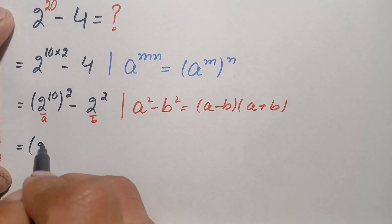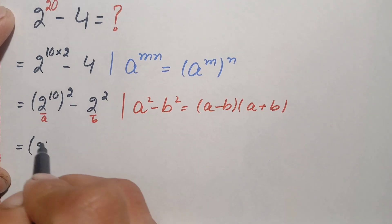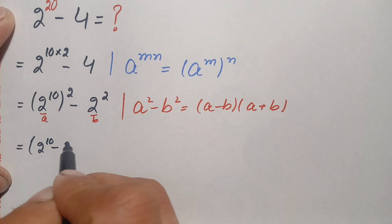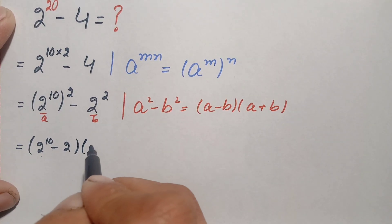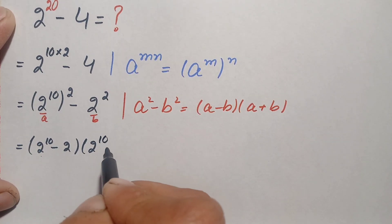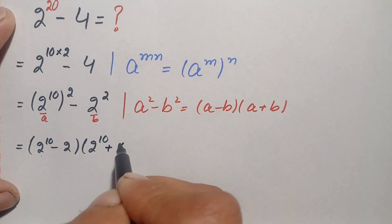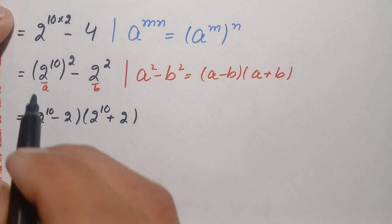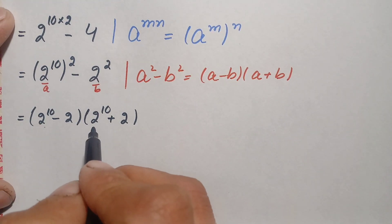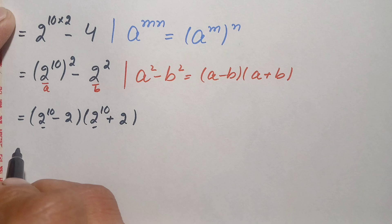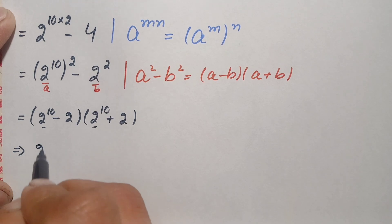Using this algebraic identity, this number will become 2 raised to power 10 minus 2, times 2 raised to power 10 plus 2. Now we will find out the value of 2 raised to power 10, which appears in both numbers. We can write 2 raised to power 10 as: